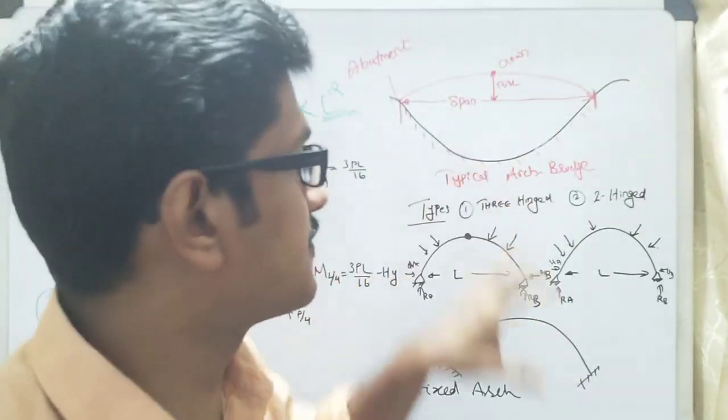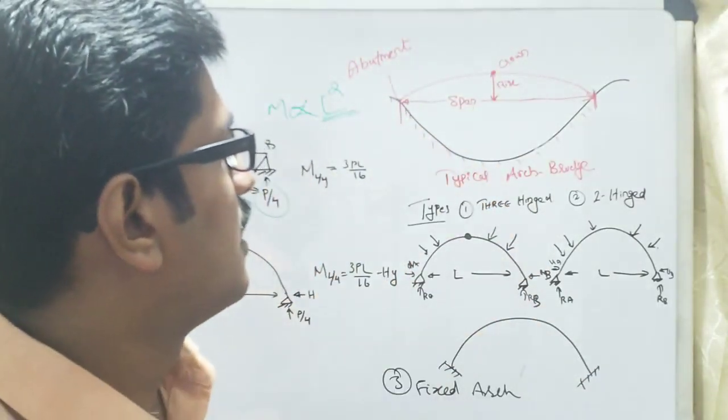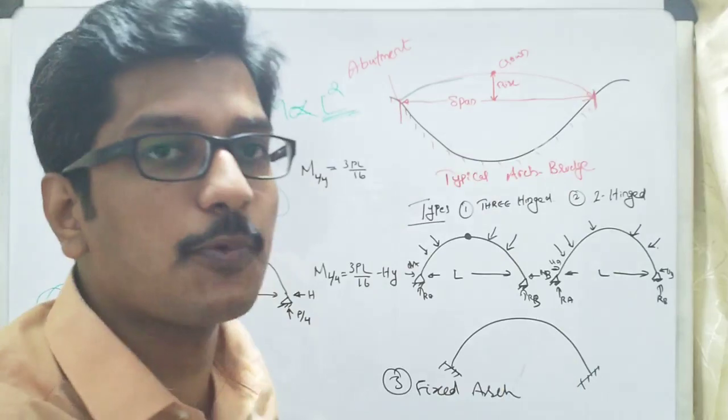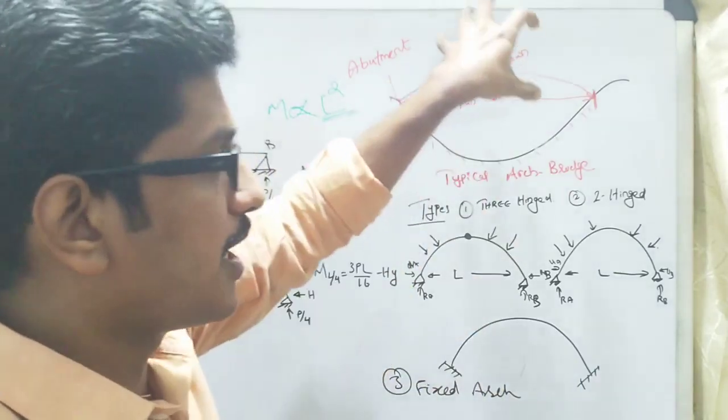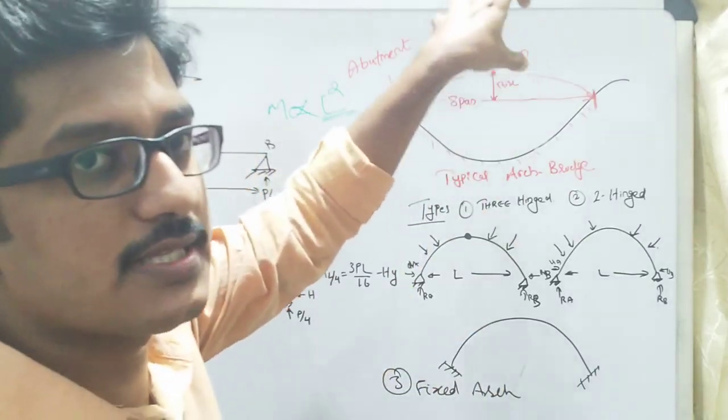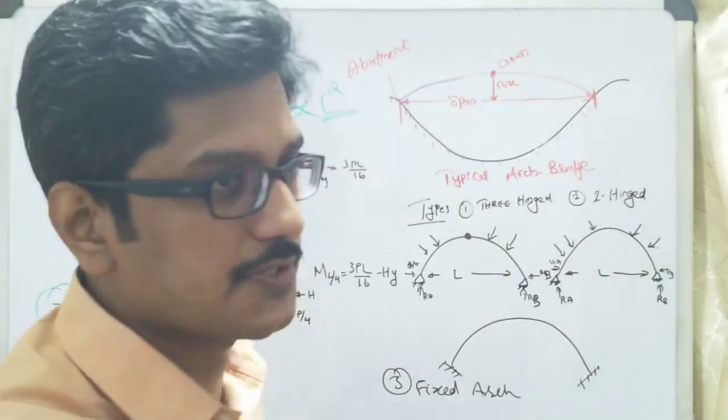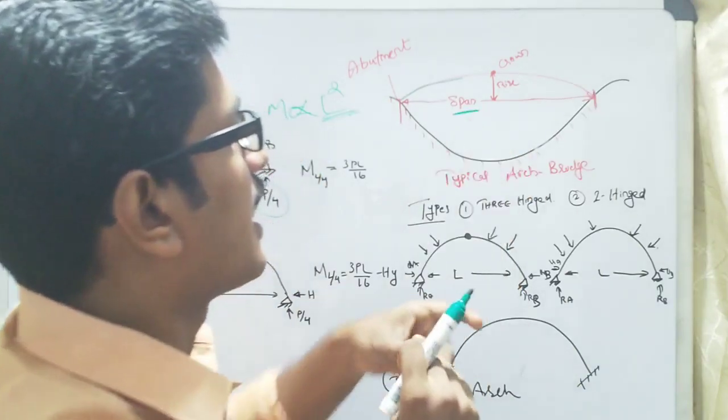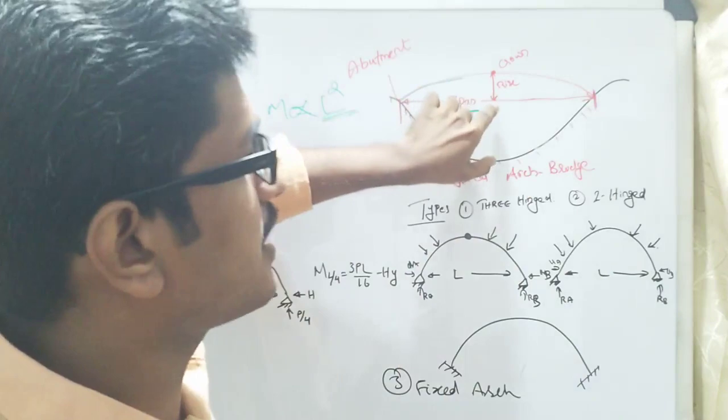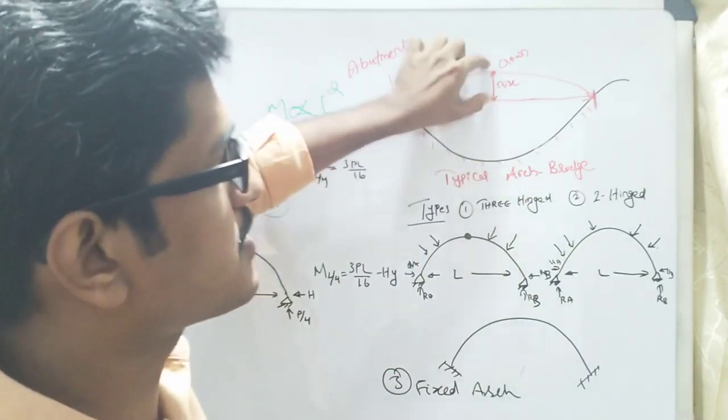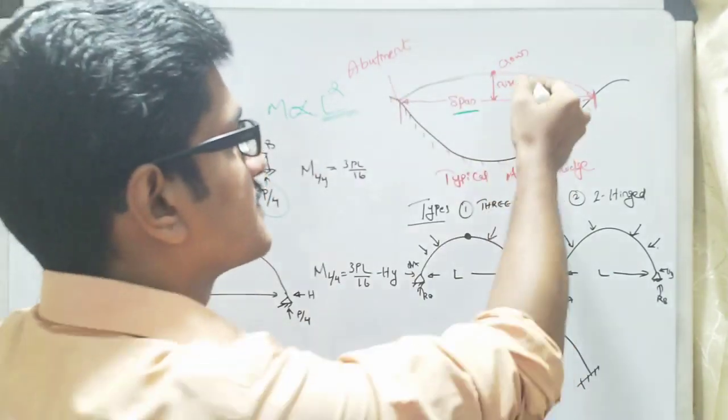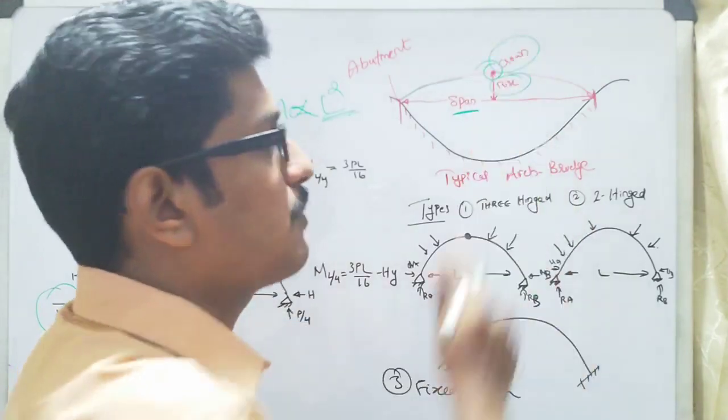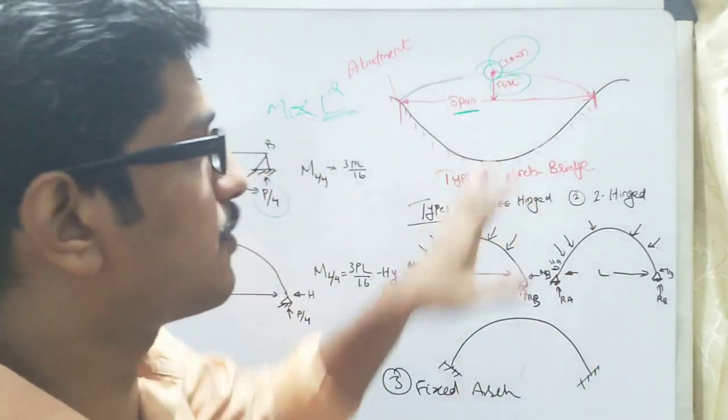Coming to some of the terminologies related with arches: the arch is held down at two supports called abutments. All the load acting over the arch is transferred to these two supports. The distance between these two supports is called span. The vertical distance from this center point to this point is called rise or height, and this center point, the topmost point, is called crown.